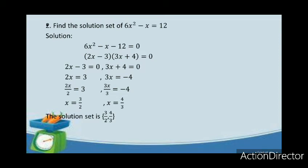On the other side, 3x plus 4 equals 0 becomes 3x equals negative 4; dividing both sides by 3, the result will be x equals negative 4 thirds. And the solution set is 3 halves and negative 4 thirds.